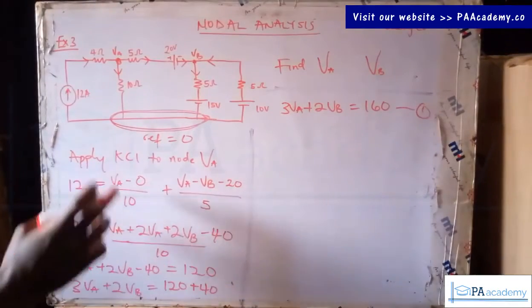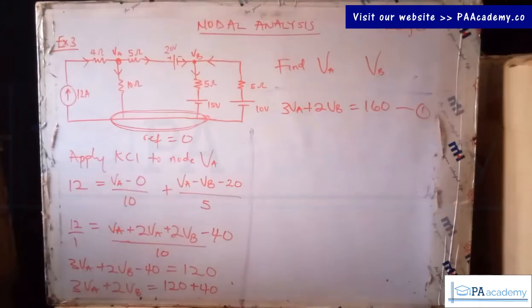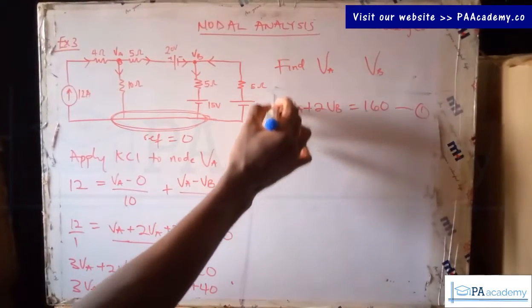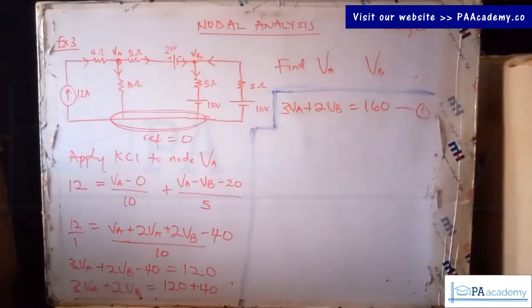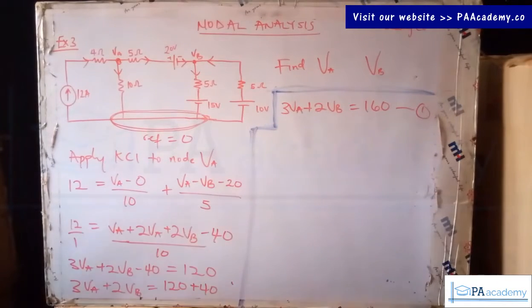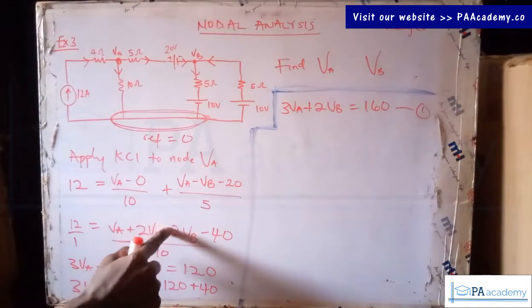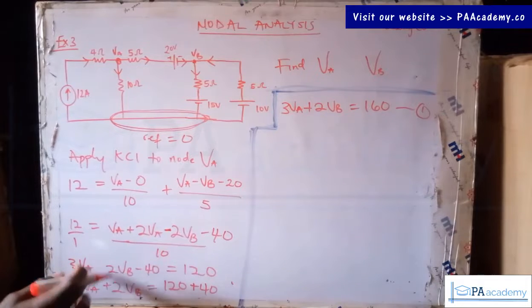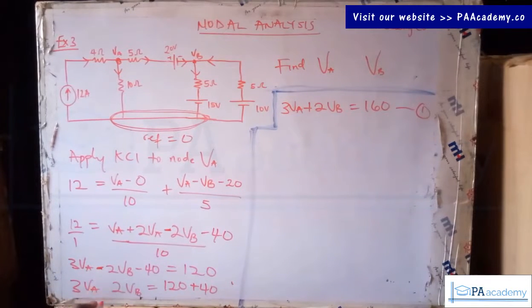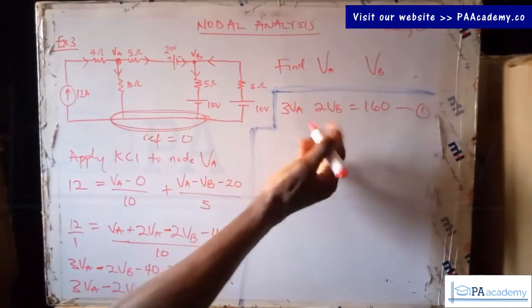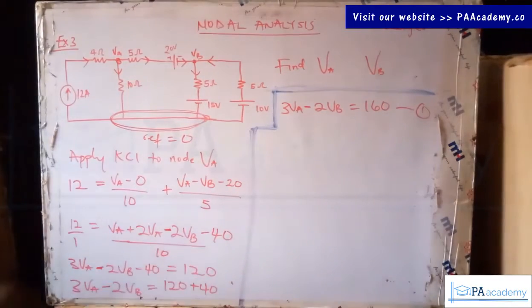So this is our equation one after applying KCL to node Va. Before we continue, there is a sign correction: the Vb term should be minus 2Vb, not plus. Please be careful with signs when solving yours as well. Now, with the corrected equation one confirmed, let's continue and do the same thing to node Vb.